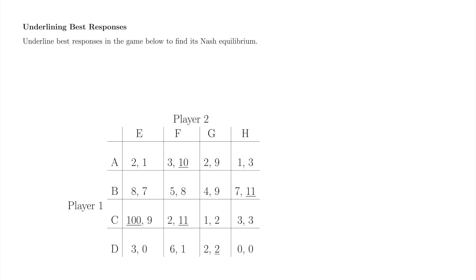Now, we'll identify Player 1's best responses to each of Player 2's strategies. When Player 2 plays E, Player 1's best response is C, since 100 is greater than 2, 8, and 3. When Player 2 plays F, Player 1's best response is D, since 6 is greater than 3, 5, and 2. When Player 2 plays G, Player 1's best response is B, since 4 is greater than 2, 1, and 2. When Player 2 plays H, Player 1's best response is B, since 7 is greater than 1, 3, and 0. We've now found Player 1's best responses to each of Player 2's strategies.